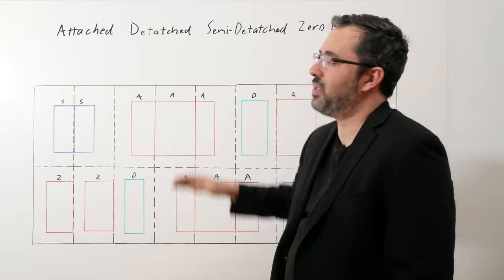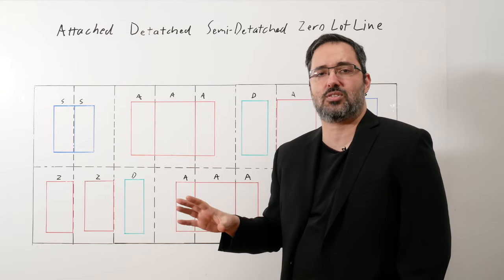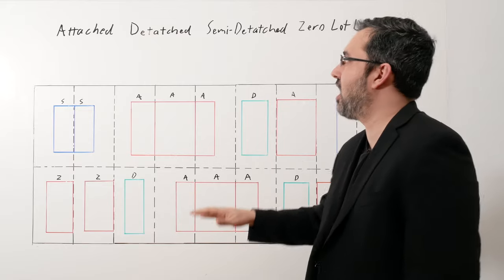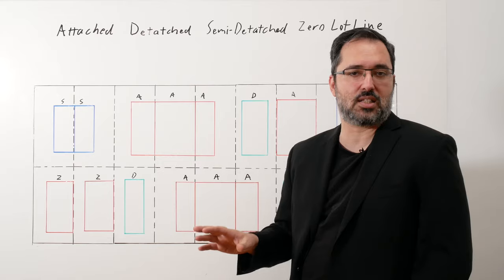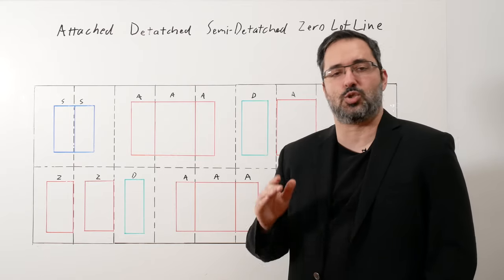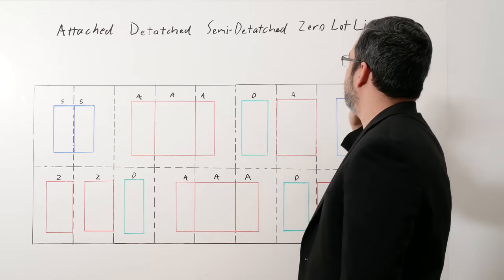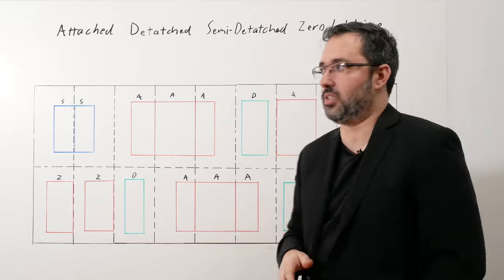So an attached building is a building that touches either two property lines or is part of a group of buildings. Detached doesn't touch any property lines and does not touch another building. A semi-detached touches one property line and one other building. And a zero lot line touches a property line, but no other building.